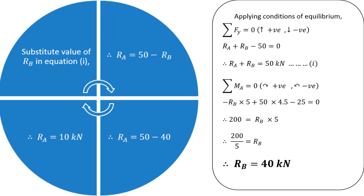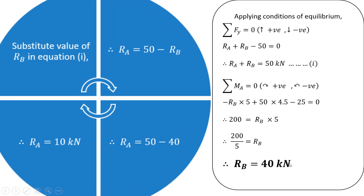Substituting the value of RB into Equation 1, RA equals 50 minus RB. Since RB is 40 kN, RA equals 50 minus 40, that is 10 kN. In this way we can find out the reactions in the case of a simply supported beam carrying a uniformly distributed load and external moment with an overhang on the right hand side. Thank you very much for watching.